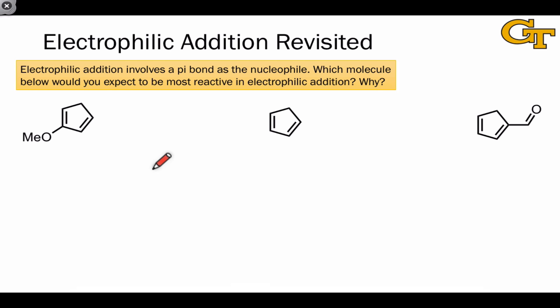Let's try putting our knowledge of electron donating and withdrawing groups to the test with a quick problem. Electrophilic addition, as we've seen, involves a pi bond as the nucleophile.